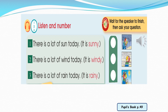Listening number one: there's a lot of sun today — it's sunny. Number two: there's a lot of wind today — it's windy. Number three: there's a lot of rain today — it's rainy.